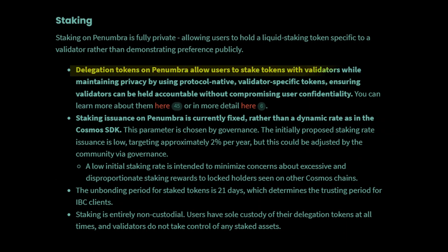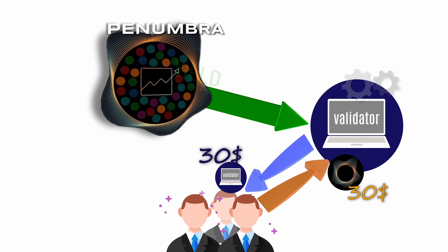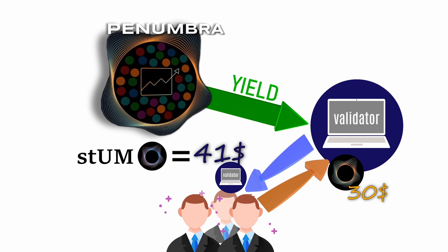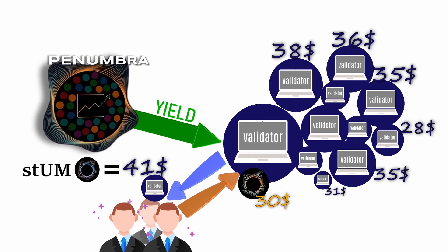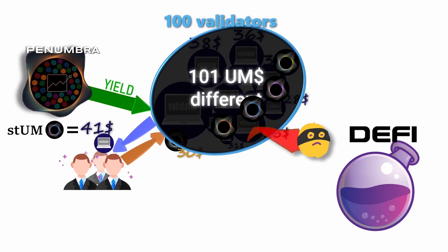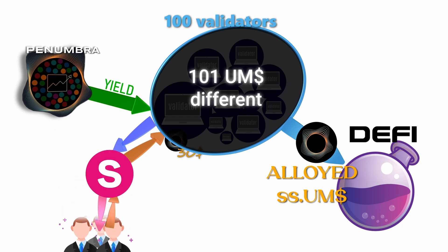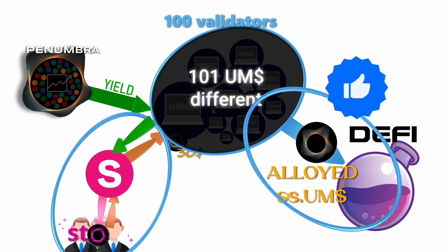Penumbra uses an alternative POS system allowing stakers to delegate their tokens privately while still receiving staking rewards, even though the protocol does not know how many UM tokens you have delegated. Delegators receive a fraction of the validator in exchange for their UM, essentially becoming shareholders of a tokenized validator. This has the same effect as a liquid staking token, except there are as many liquid staking issuers as there are active Penumbra validators — 100 different UMs — which does not facilitate DeFi integration, being too fragmented. That's why an Alloyed Osmosis pool as soon as possible would make all these tokens fungible into a single canonical staked UM. There is also the classic liquid staking solution from Stride, which will delegate UM to different validators and issue stUM in exchange.